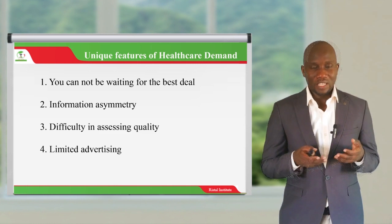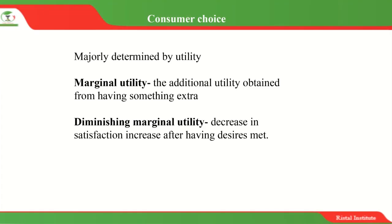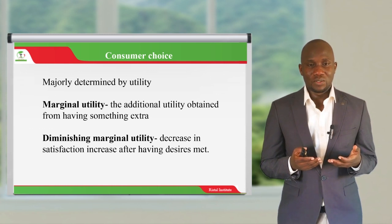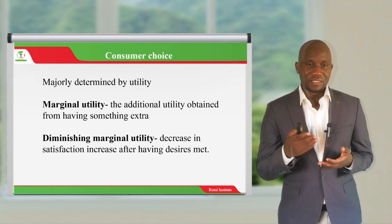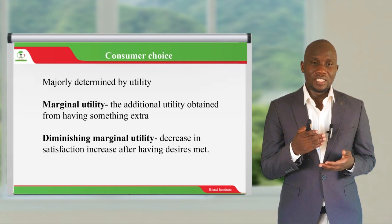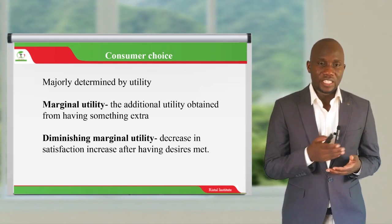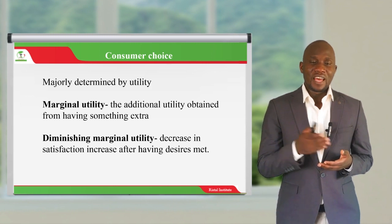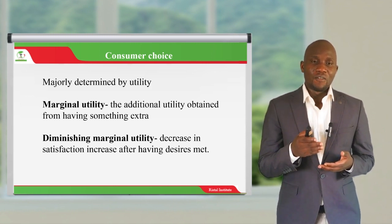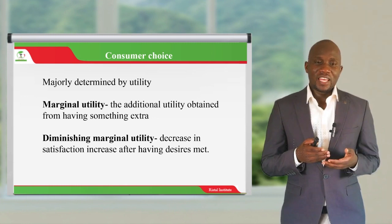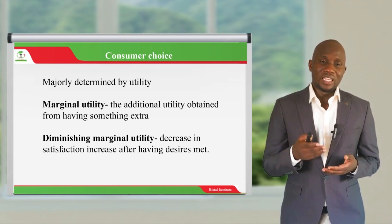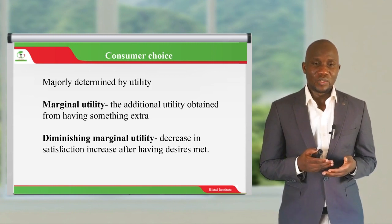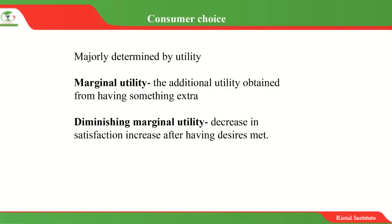Doctors cannot advertise their services freely, so knowing where to get a service at a given price is quite difficult. Individuals make choices based on maximizing utility, but it is important to understand that the increase in utility cannot be indefinite. Marginal utility is the additional utility obtained from an extra input, and there comes a point where even if you increase the input you do not continuously increase utility — that is diminishing marginal utility.